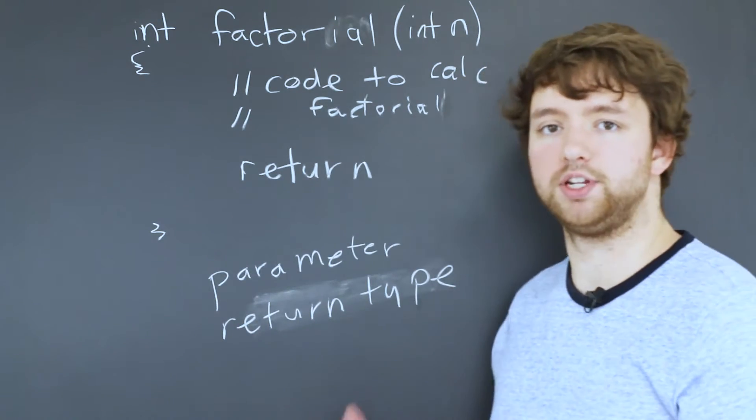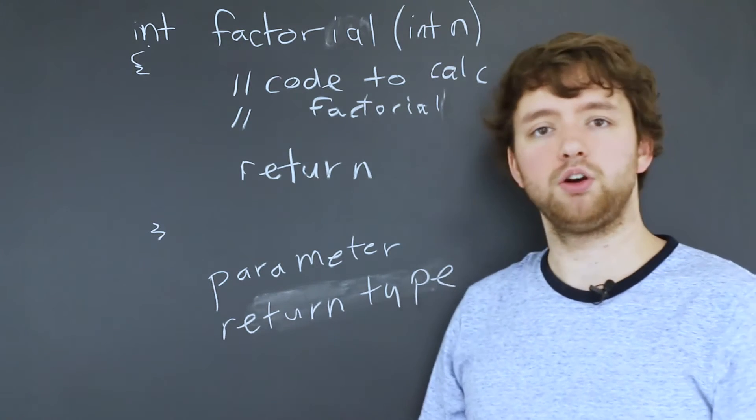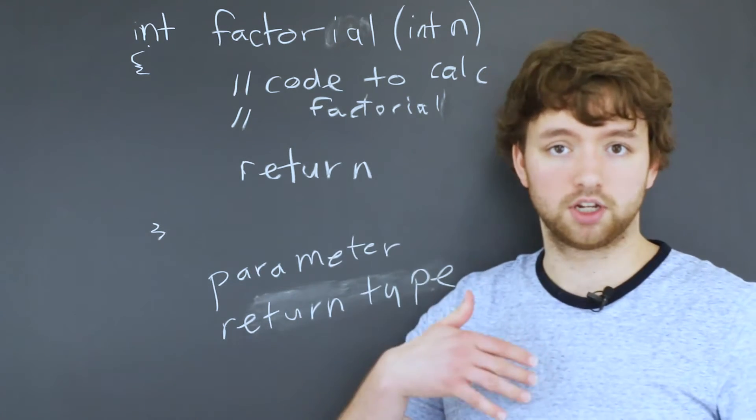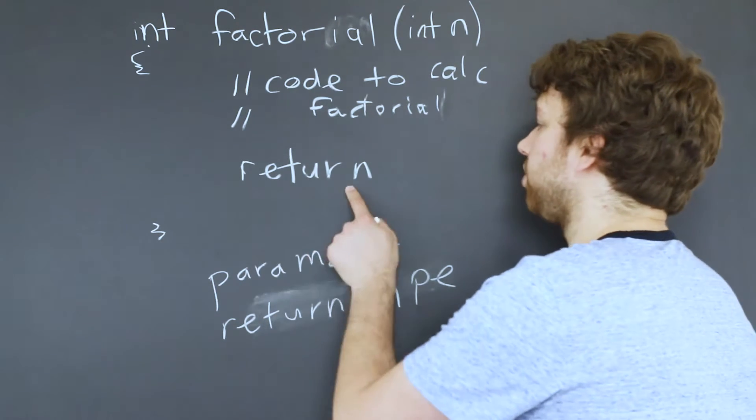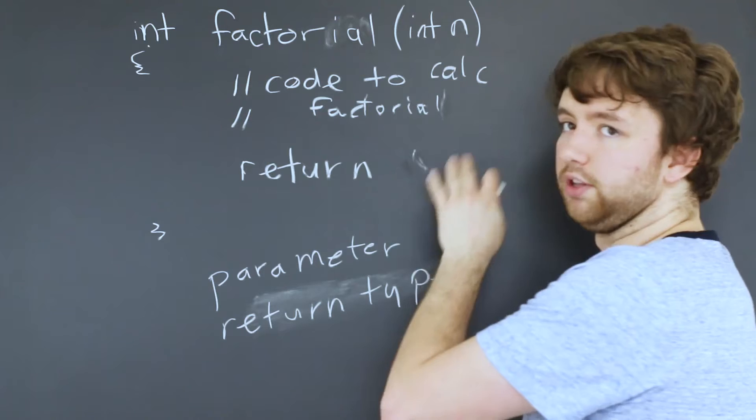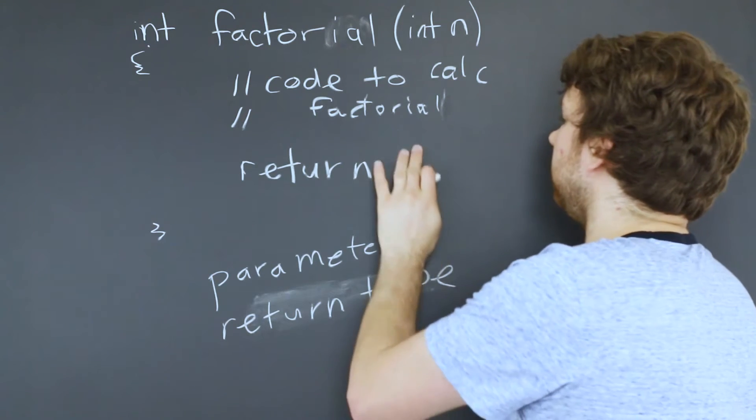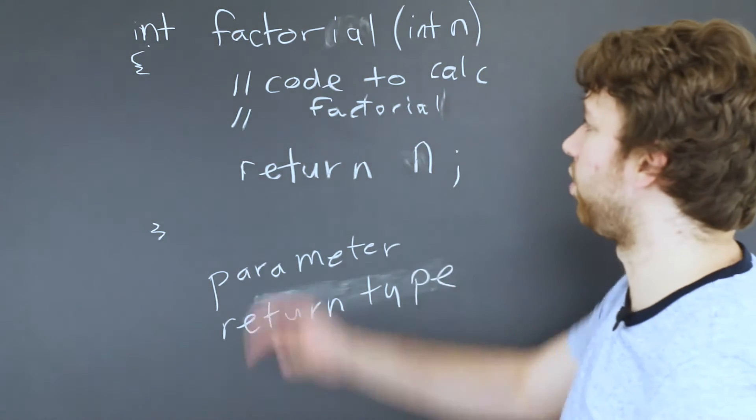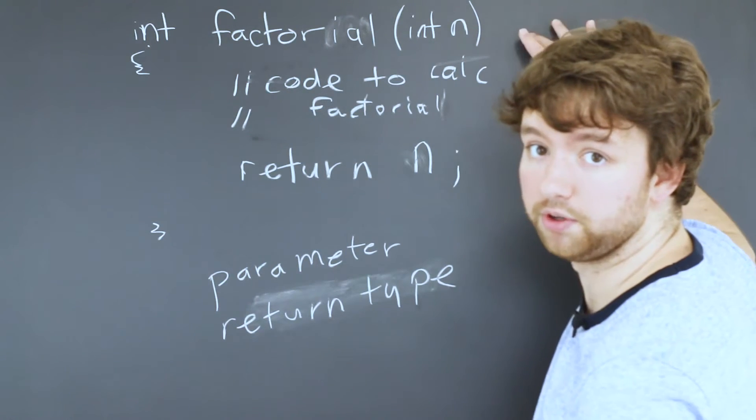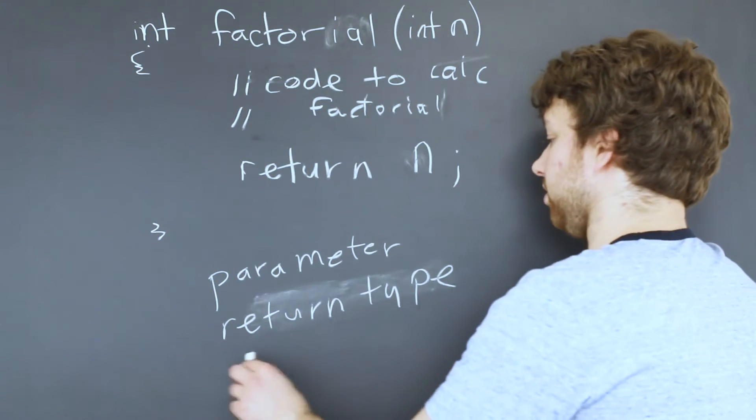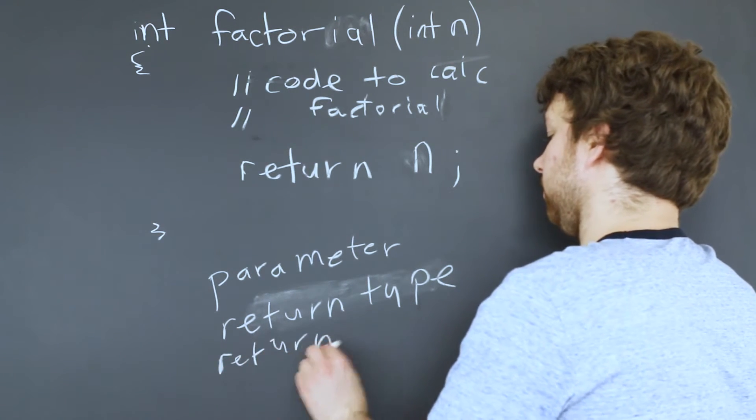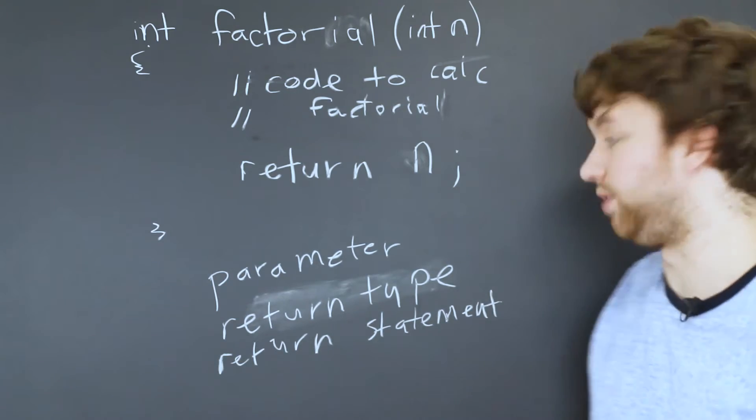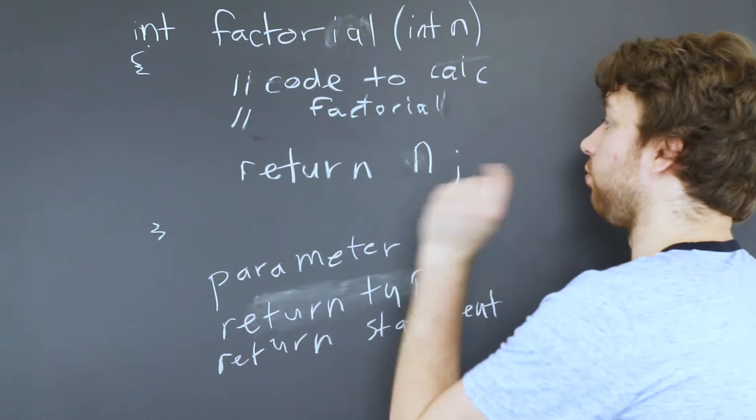So the person calling this function is expecting something in return. You know we it's just it's fair right. We give it something. We give the function a cookie and it returns us something in return. Makes sense. So we say return and you can return either a value, a variable, whatever it is. We could just say we could just return n and this code up here would need to convert n to the factorial. So we got the return type. We got the return statement. And that is the three main things you need to understand for creating a function.